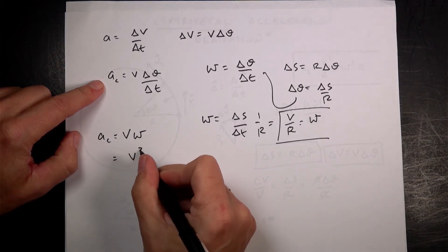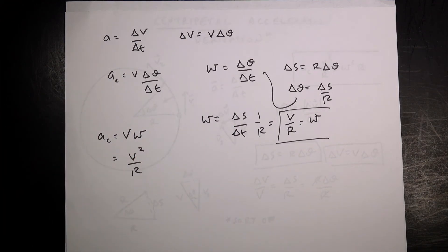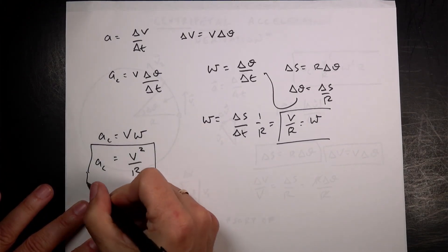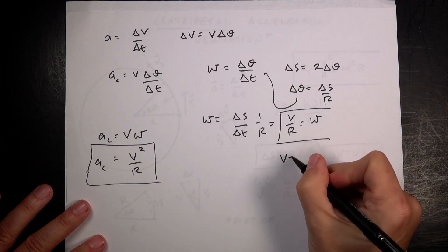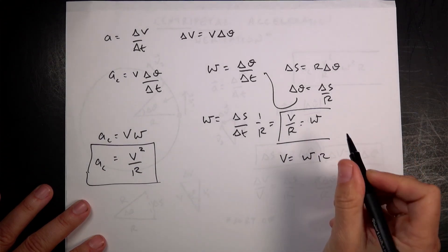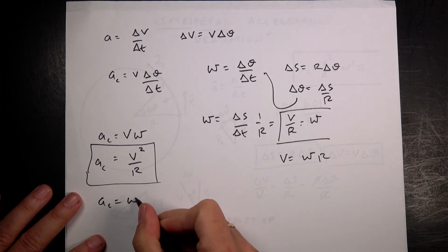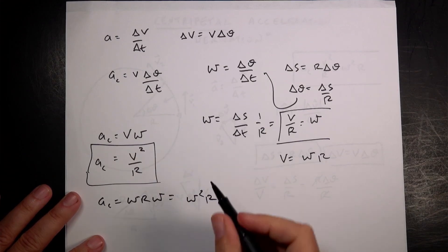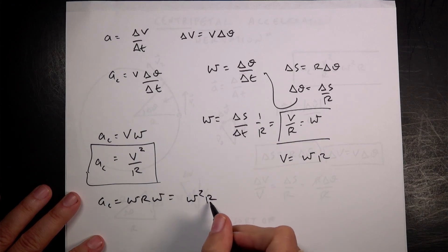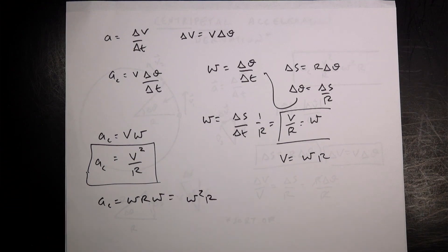So now a_c equals v times omega, and omega is v over r, giving a_c equals v squared over r — that's your centripetal acceleration. And sometimes it's more useful to substitute v equals omega times r, which gives a_c equals omega r times omega, or omega squared times r. The units check out: radians squared per second squared times meters gives meters per second squared. So there you go — that's an algebra-based derivation of the centripetal acceleration of an object moving in a circle at constant speed.